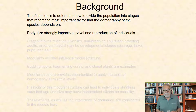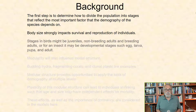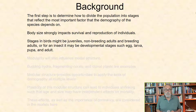If survival and reproduction have nothing to do with size, for example with a bird species, the stages might be juveniles, non-breeding adults, and breeding adults. Or for an insect, it may be developmental stages such as egg, larvae, pupae, and adult.